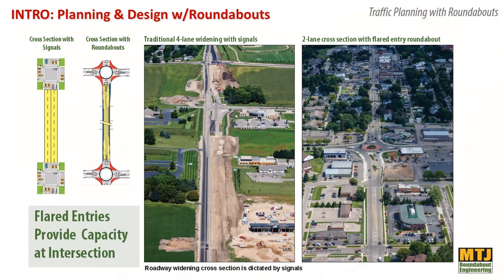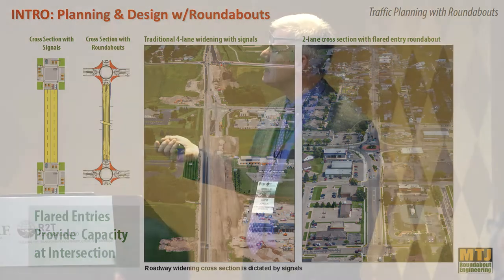With roundabouts, you don't have to widen the road — you can flare at the entry. That doesn't work with signals; that's why we go from two lanes to four lanes. This widening is just south of this project, which is an old town part of a small community. We replaced a signal with a flared entry roundabout, which allowed all of the legs to remain as one lane of traffic in each direction, flaring to a two-lane entry — providing capacity at the intersection without having to widen all the roadway segments leading up to it.